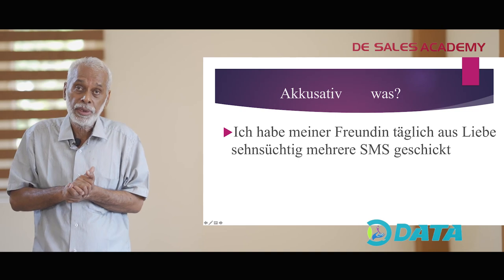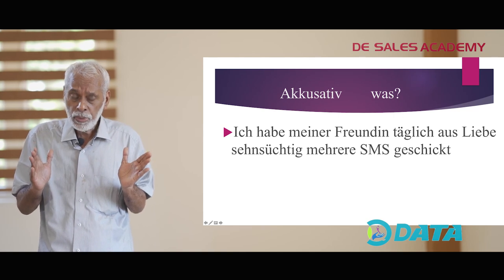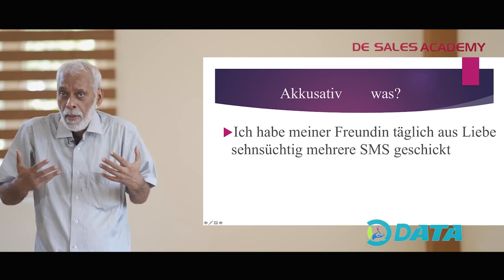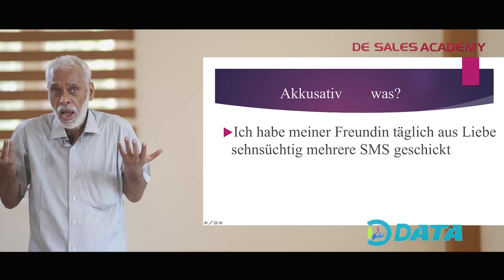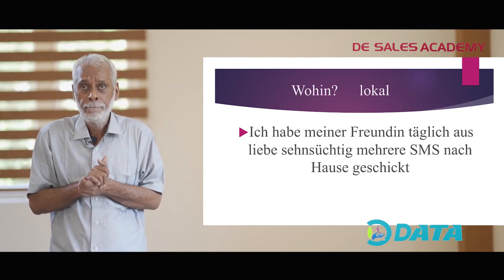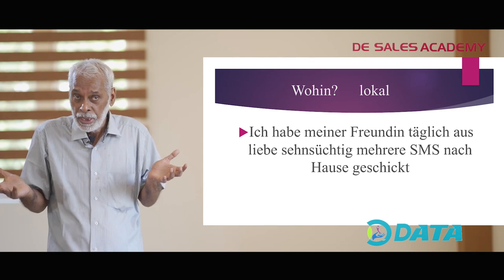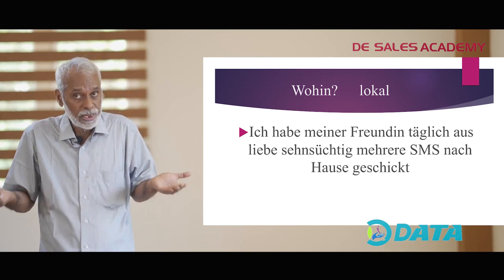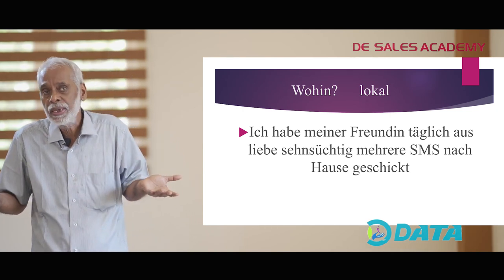Then comes the question was hast du geschickt — the Akkusativobjekt. So the sentence now becomes: Ich habe meiner Freundin täglich aus Liebe sehnsüchtig mehrere SMS geschickt — mehrere SMS, das ist das Akkusativobjekt. Jetzt endlich kommt die Frage woher/wohin — das hat eine lokale Bedeutung.